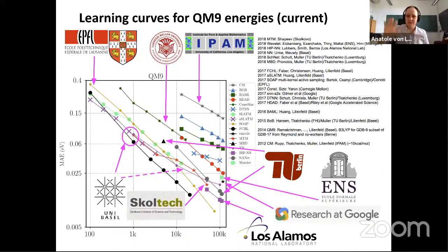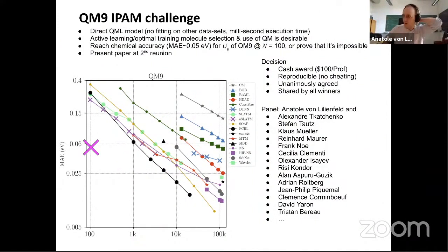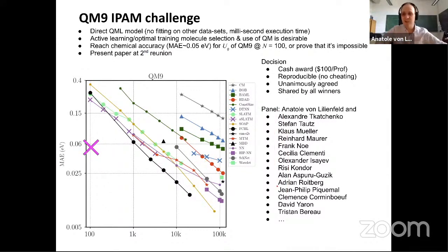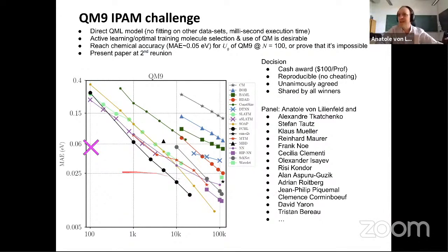FCHL is still doing very well. We had the impression the field had saturated and there was not much more progress. So two years ago we announced this challenge: for anybody who gets a machine learning model that hits the target point, the professors on the list agree to each pay a hundred dollars. It would be scientifically much more interesting to better understand how a machine learning model could reach such data efficiency.